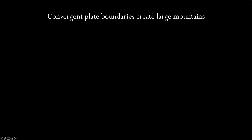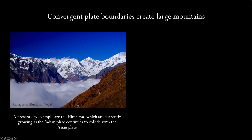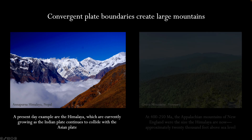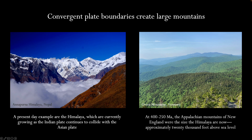Convergent plate boundaries create large mountains. A present-day example are the Himalaya, Earth's tallest mountains, which are continually growing as the Indian plate collides with the Asian plate. Between 400 and 250 million years ago, the Appalachian Mountains were forming due to continental collision, and they were the size that the Himalaya are now — approximately 20,000 feet above sea level.